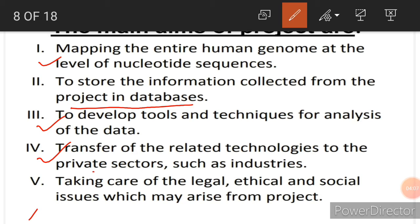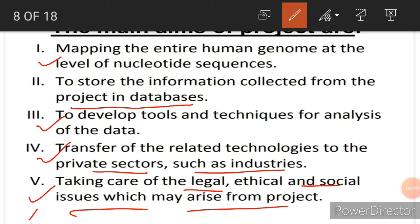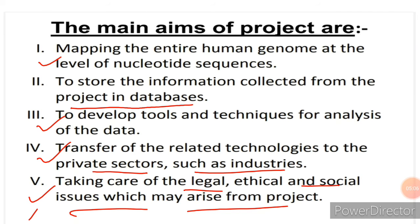Another goal was the transfer of related technologies to the private sector, such as industries, so that gene combinations could be used for production of various kinds of proteins, enzymes, hormones and medical treatments. Finally, there was the goal of taking care of legal, ethical and social issues arising from the project. The human genome project took 13 years to complete, finishing in 2003, with an extended contribution given in 2006.